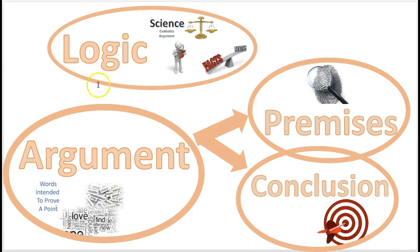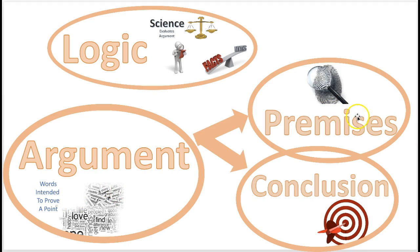But first there's a pop quiz. Question: what is logic from the last video? Logic is the science that evaluates arguments. Question number two: what is an argument? An argument is when somebody tries to prove something — words that are intended to prove a point. And a premise? A premise is content in the argument; it's basically the evidence that leads to the point they're trying to prove, which would be the conclusion. The conclusion is the point that the person is trying to prove.